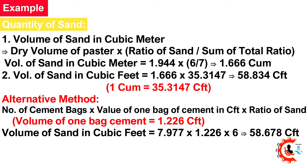Alternative method for sand: Number of cement bags × volume of 1 bag in cubic feet × ratio of sand. Volume of 1 bag of cement = 1.226 cubic feet. Volume of sand = 7.977 × 1.226 × 6 = 58.678 cubic feet.